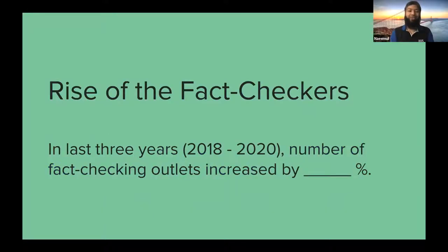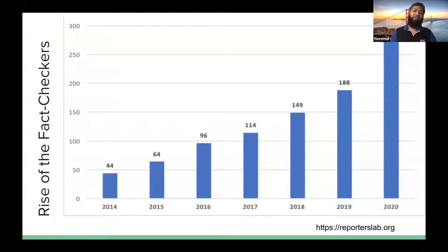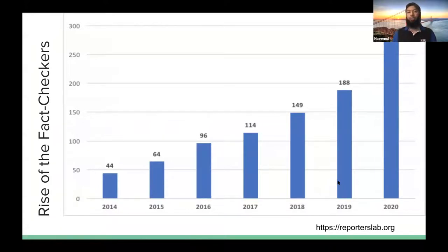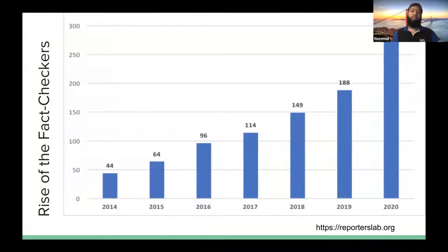Here's a question for you all: in the last three years, the number of fact-checkers out there has increased by what percent — 25, 50, or 100? Here is the graph for the rise of fact-checkers. We see that in 2020 we have about 100% more fact-checking outlets than we had in 2018 — 149 total. And this is the scenario in the whole world, not just in the United States. It shows that people are trying to catch up with the deluge of misinformation. The journalists are trying, the fact-checkers are trying.